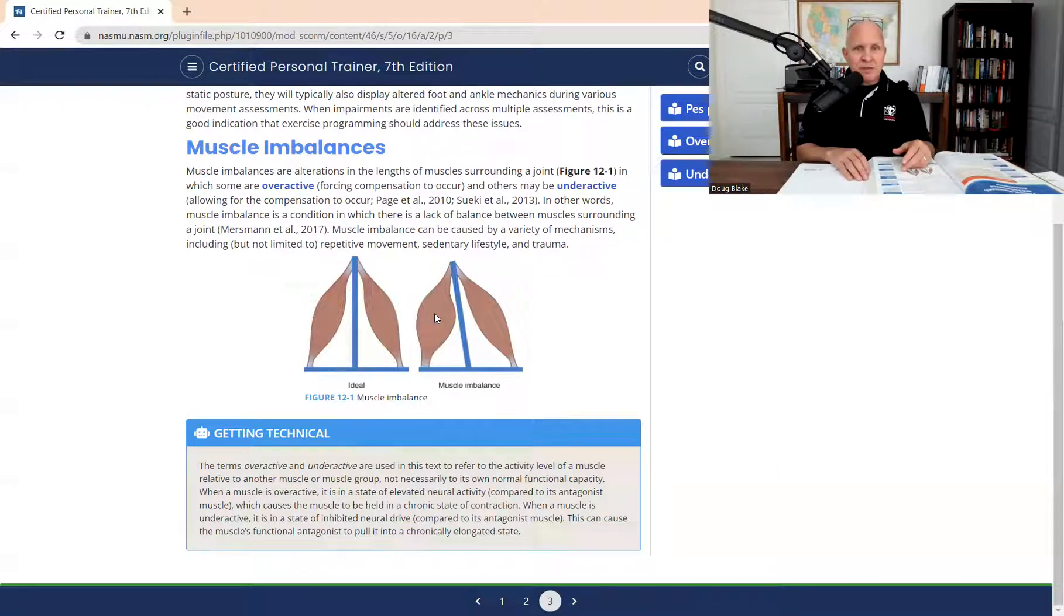So the iliopsoas muscles, just for instance, if you know that they are overactive and you've already memorized, right, what the muscles are, what the major muscle groups are at the hip. And that's what you're seeing when you look at the solution chart in like the overhead squat assessment.